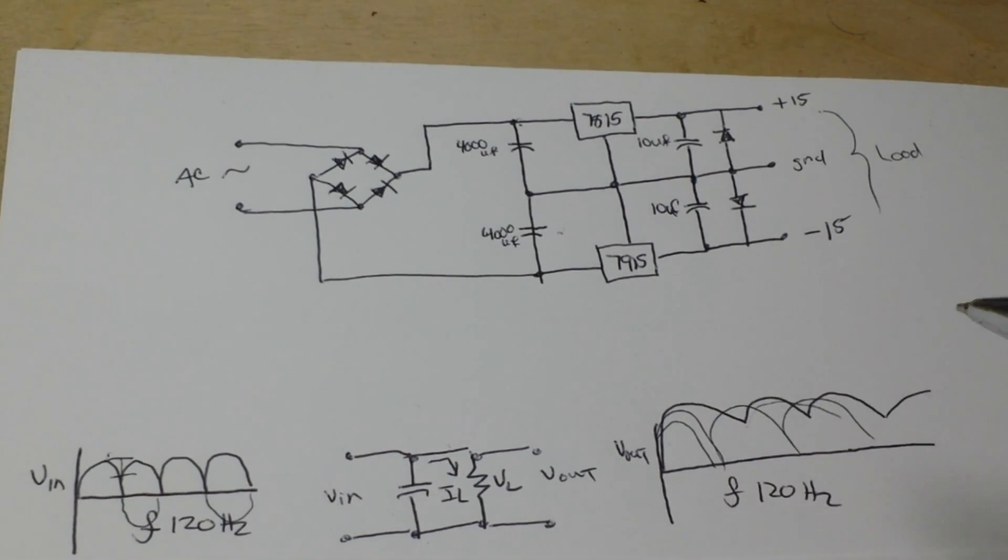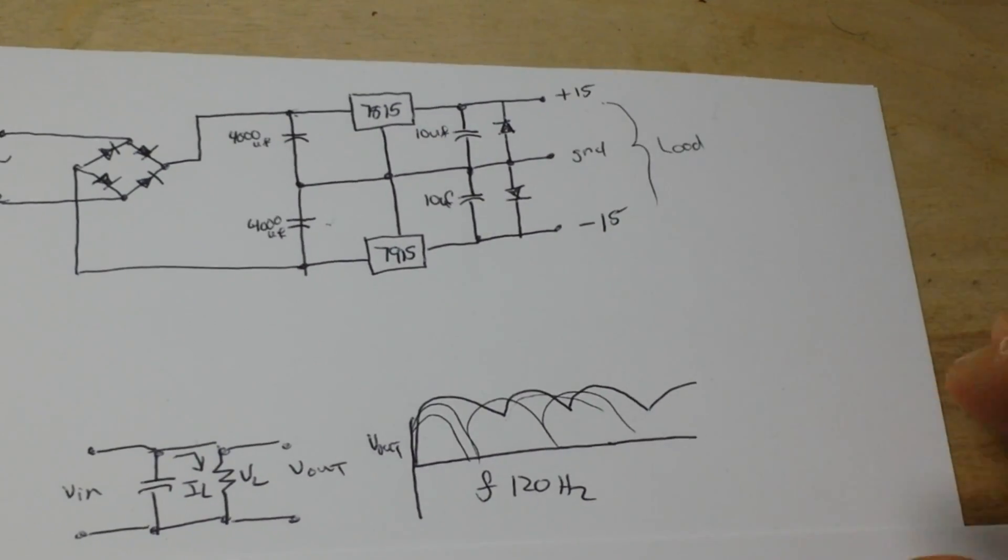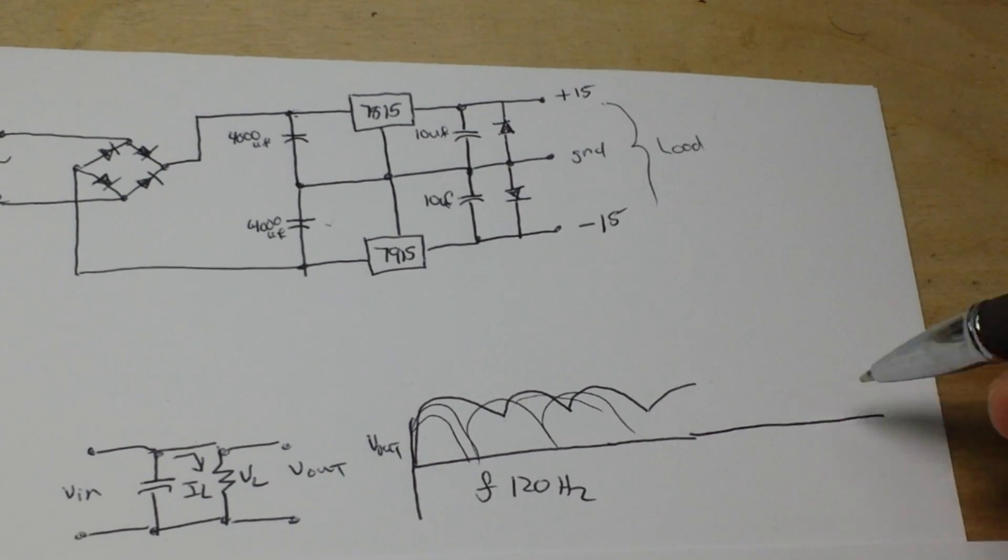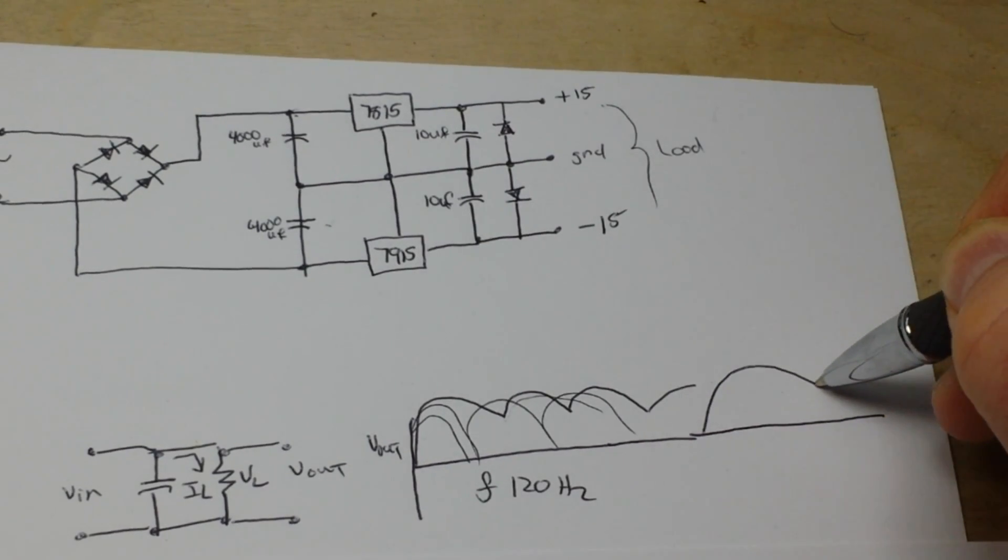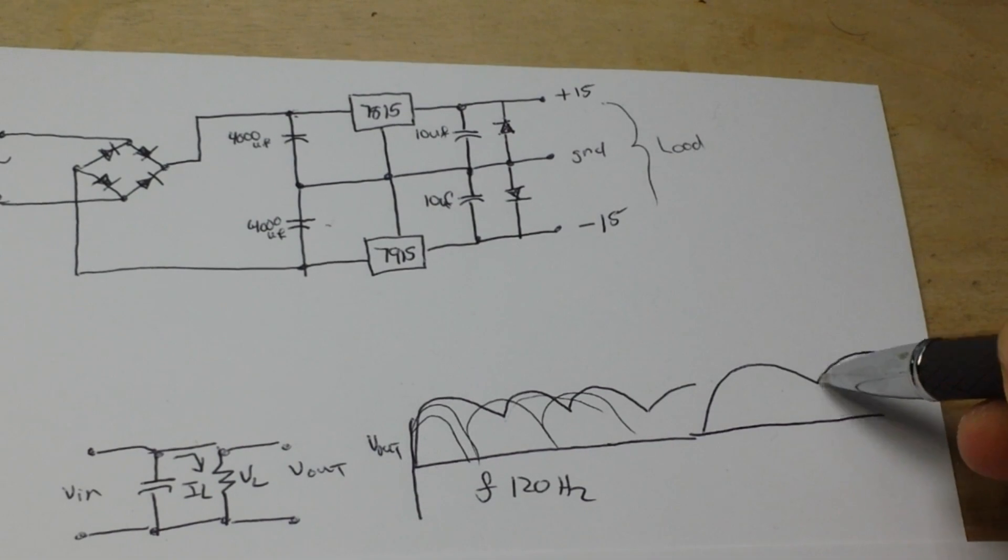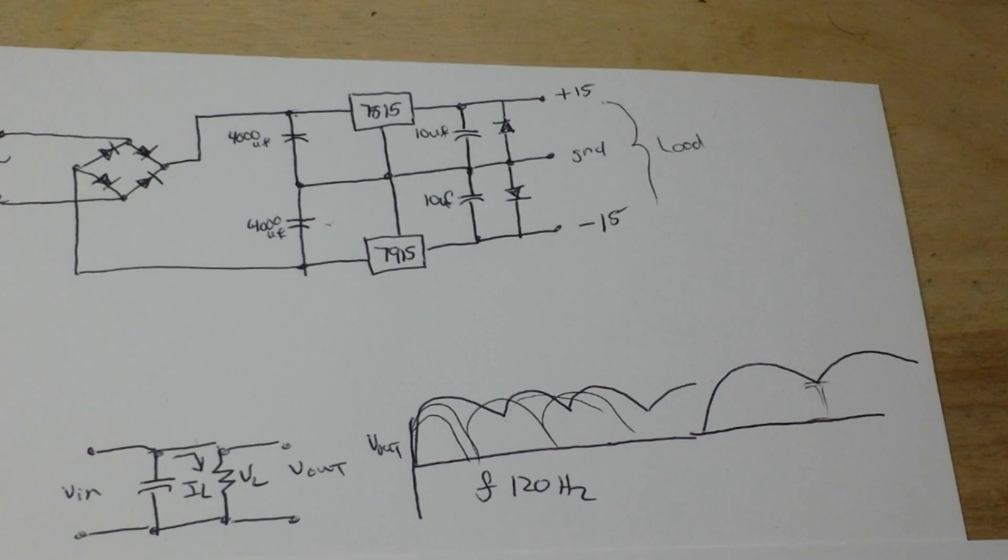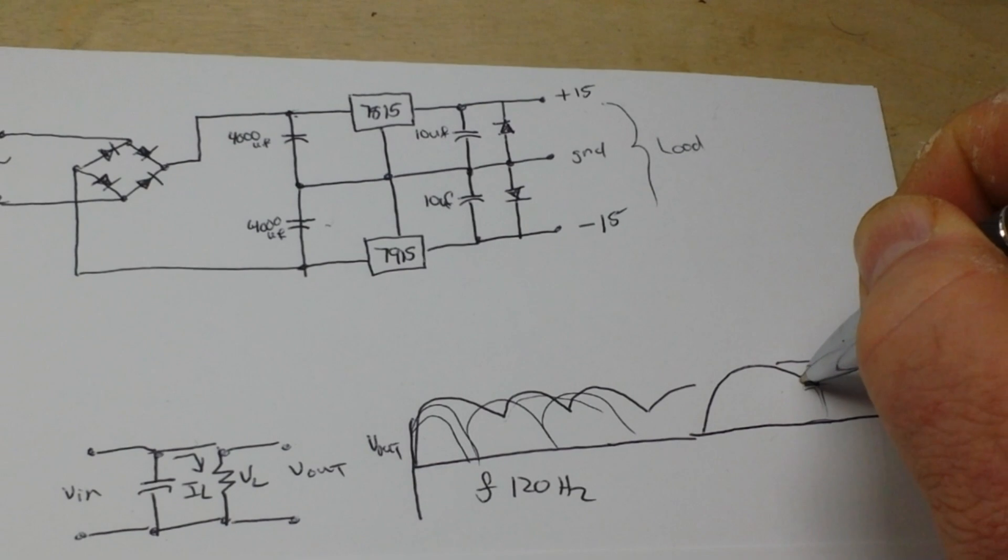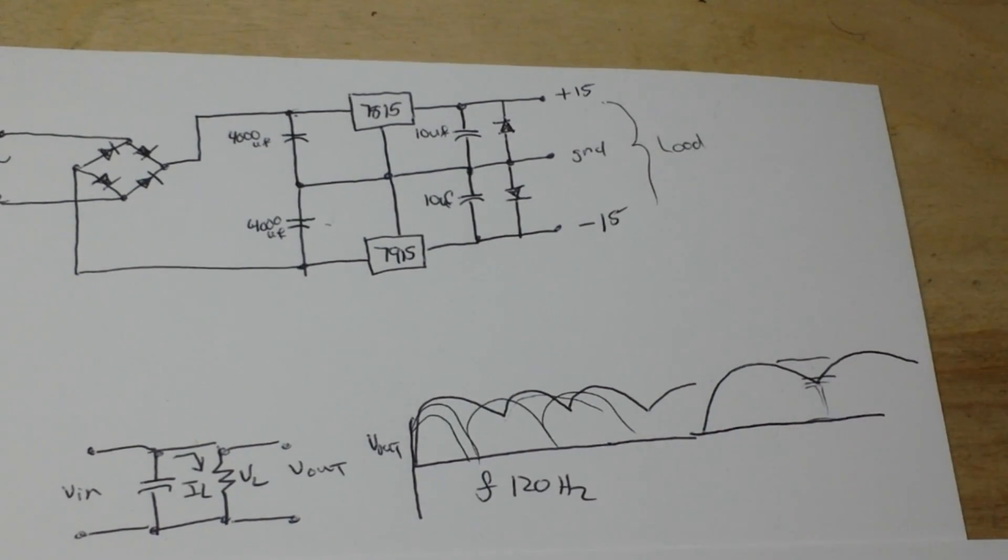Instead of, you know, looking like this, now we have this look here. What's happening is this area here is what the capacitor has basically sucked up and is changing. But we still have this small area here, and that's our ripple. We want to make sure that we have big enough capacitors to do the job.